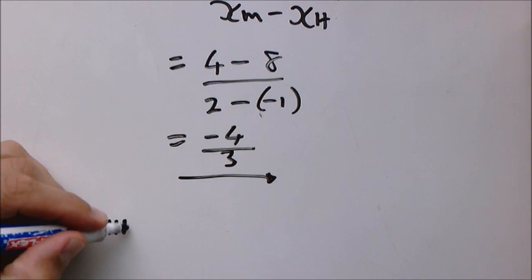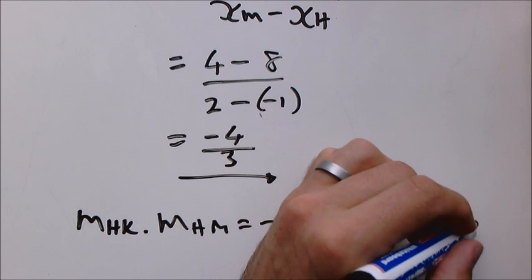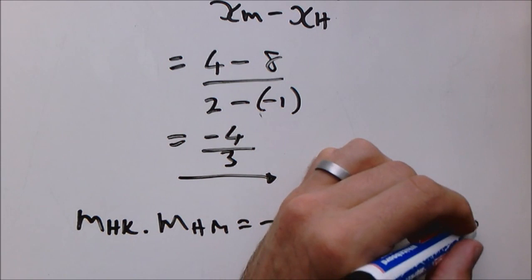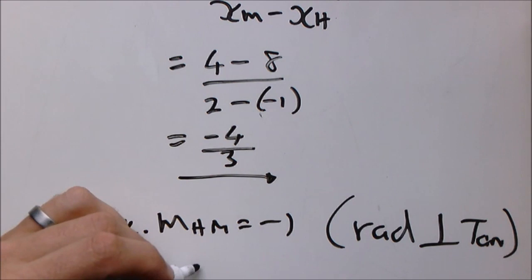Now we want the gradient of HK. In order to do that we are writing down the following expression and saying that the radius is perpendicular to the tangent. Therefore the gradient of the tangent is 3/4.